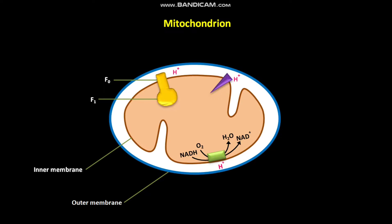As a result, a positive electric potential is formed on the intermembrane space, whereas a negative electric potential is formed on the matrix side of the inner membrane of the mitochondrion. Also, due to this H+ ion concentration difference across the inner membrane,